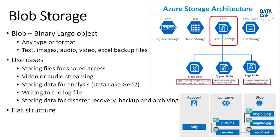The next one is Page Blobs. Page Blobs consist of pages. A page is 512 bytes and the blobs can be up to 1 TB in size. This type is typically used for fast read and write operations. If you want to run OLTP systems, you can use Page Blobs.